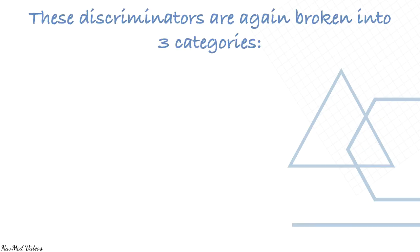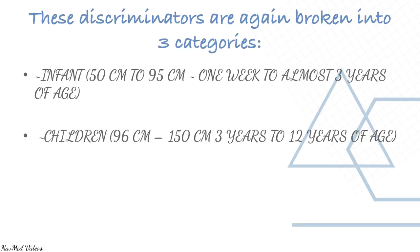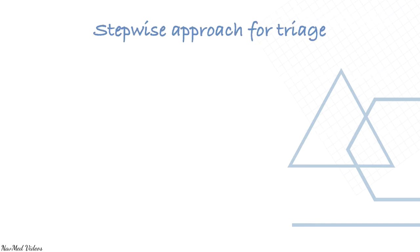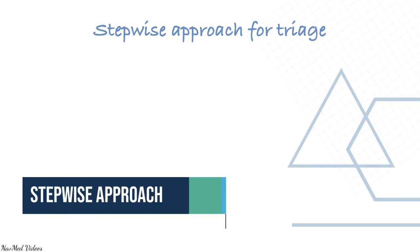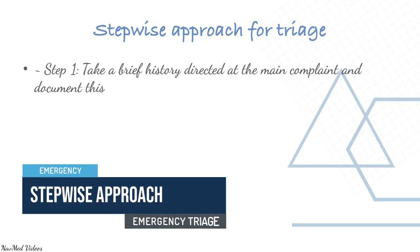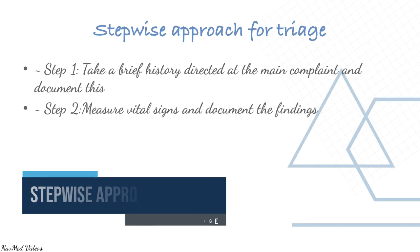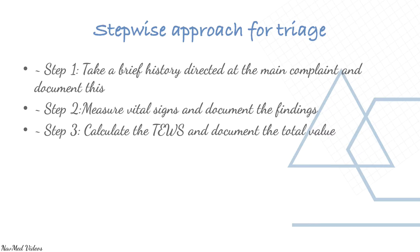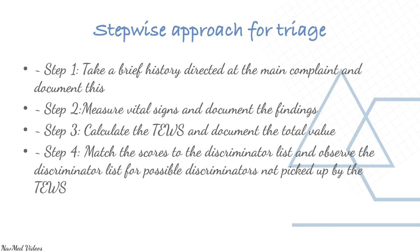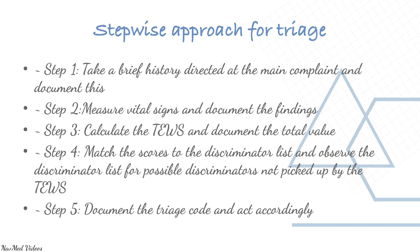Discriminators are broken into three categories: infant, children, and adults. The stepwise approach to triage: Step 1 — take a brief history directed at the main complaint and document. Step 2 — measure vital signs and document. Step 3 — calculate the TWOS and document the total value. Step 4 — match the score to the discriminator list and observe for possible discriminators; don't select by TWOS alone. Step 5 — document the triage code and act accordingly.